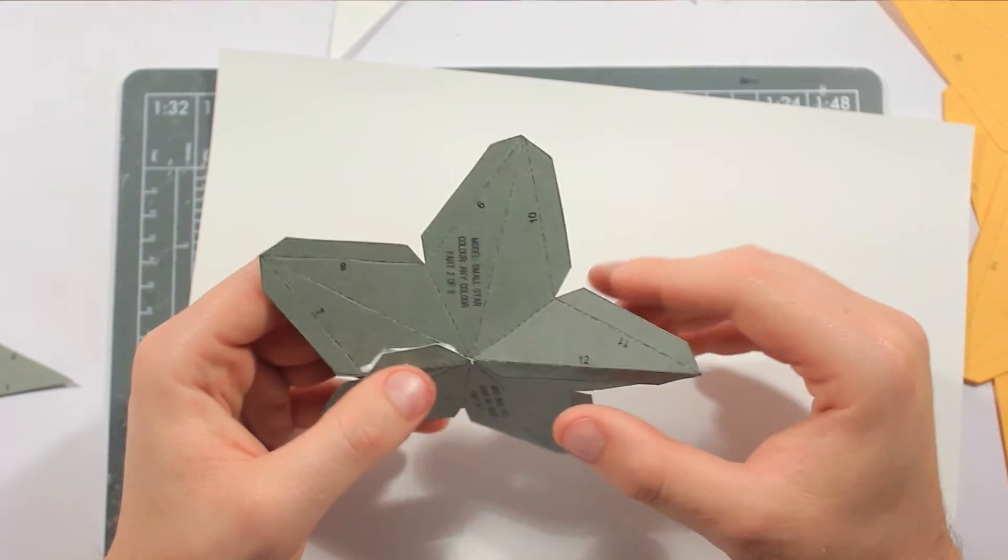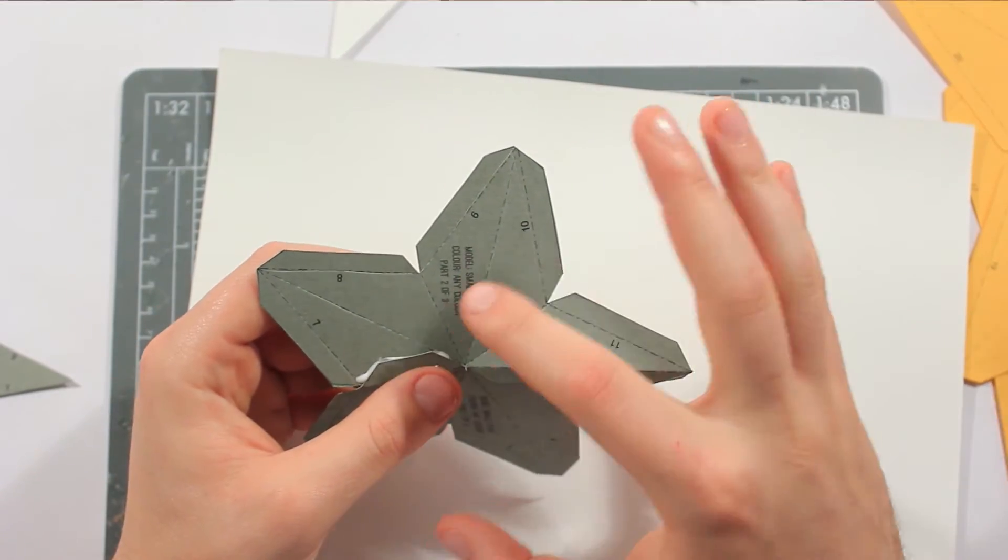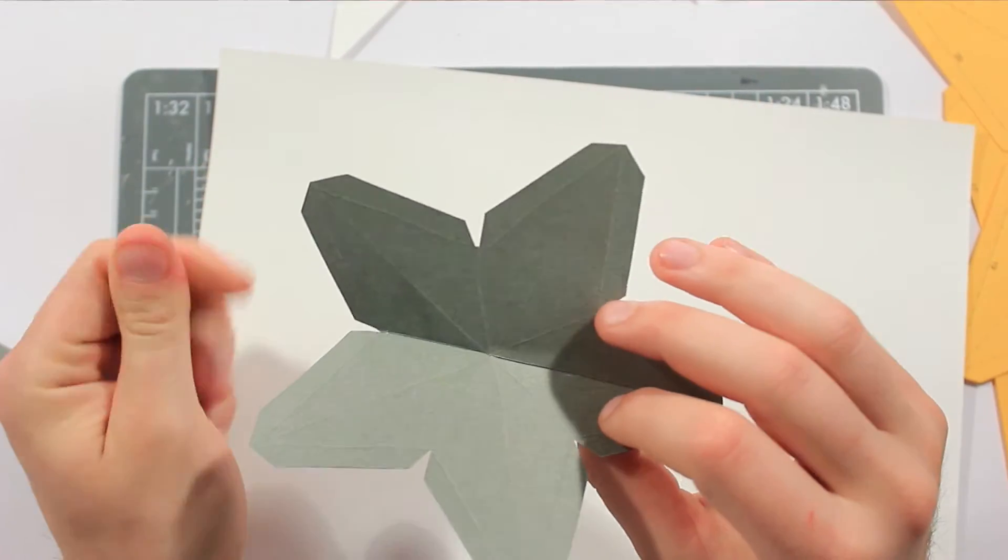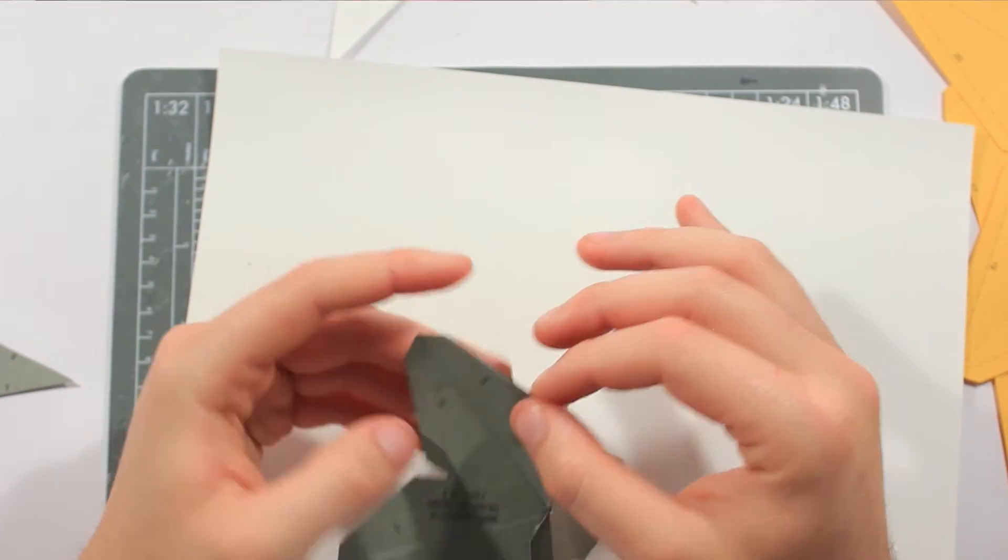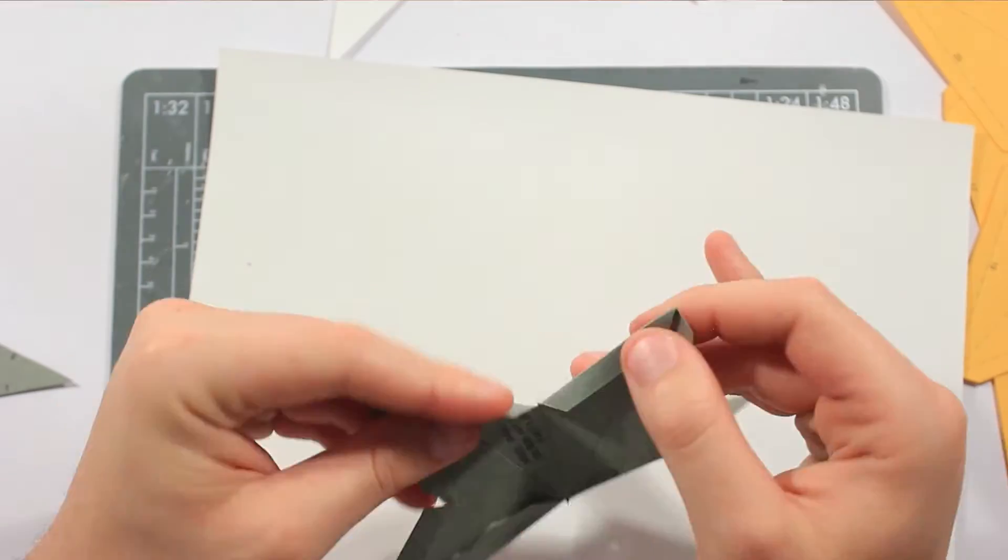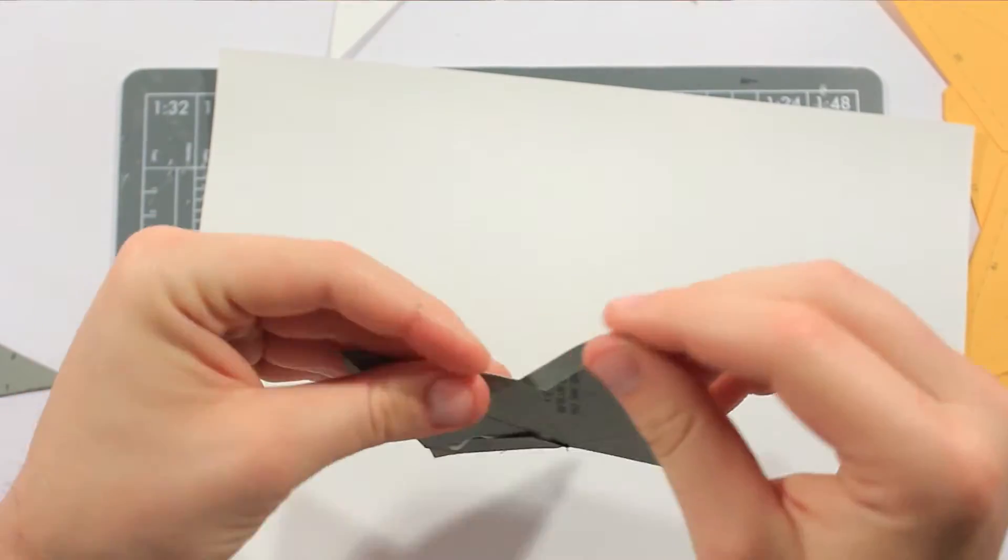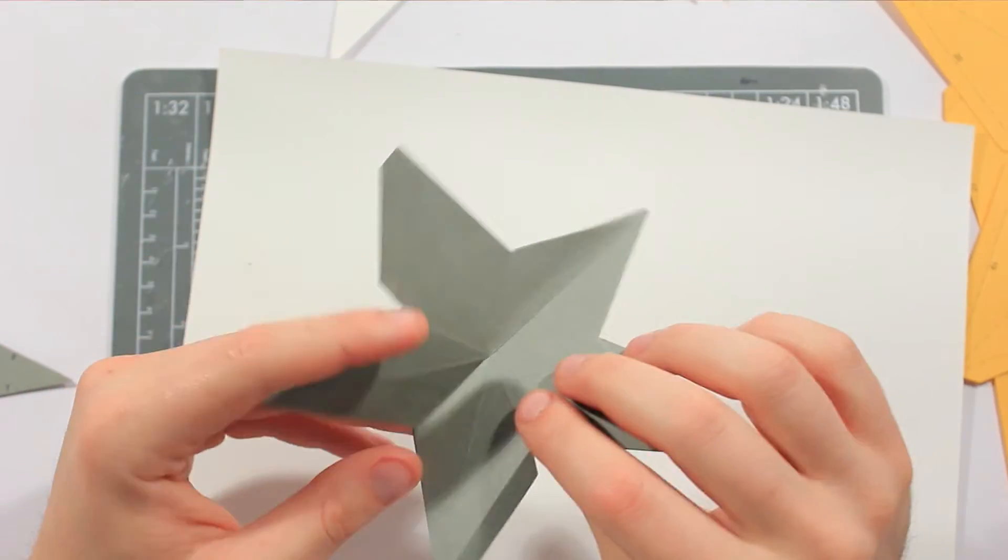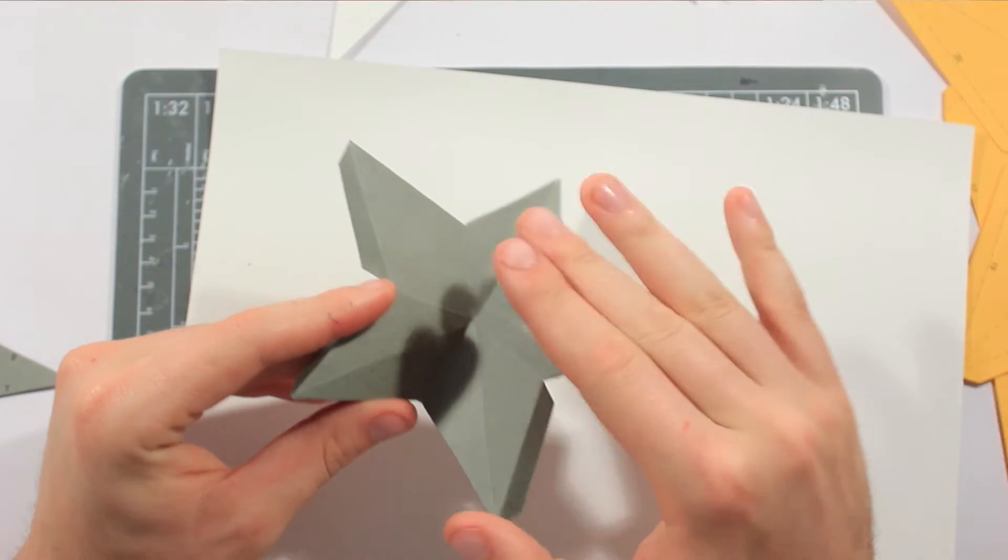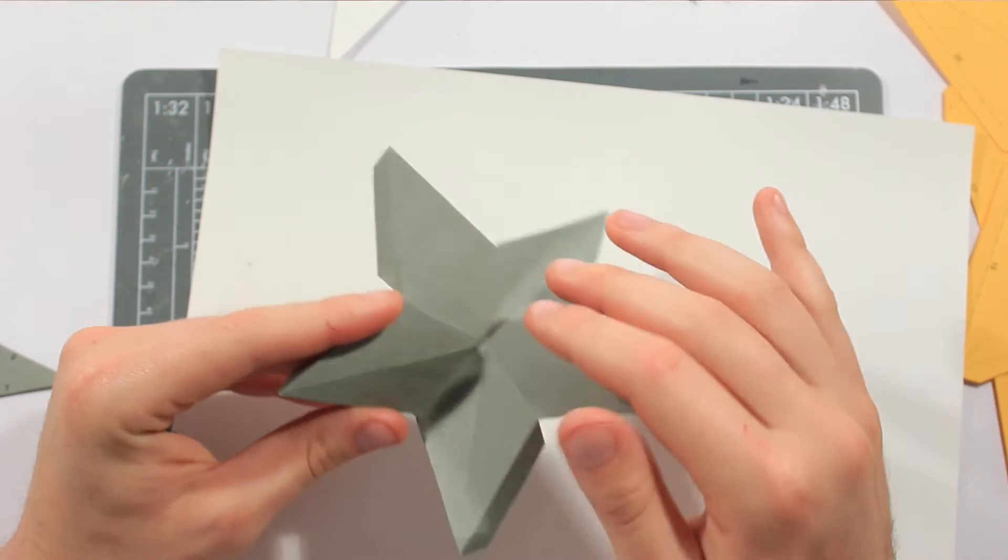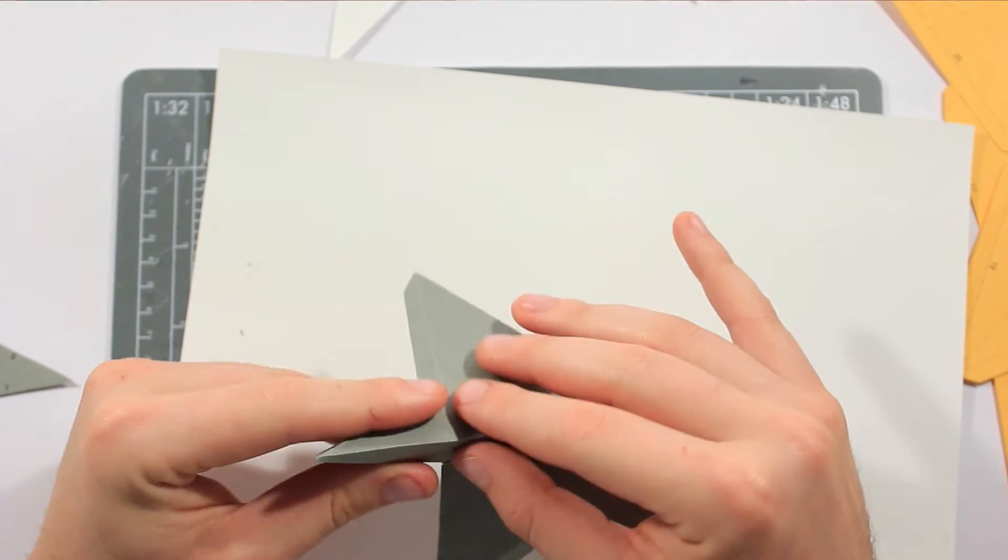So with this, the printed side is going to be underneath, so you won't see it. So you have to fold down all the tabs, and then you need to fold the edge, so this is a mountain fold, what that means is poking outwards, so like that.